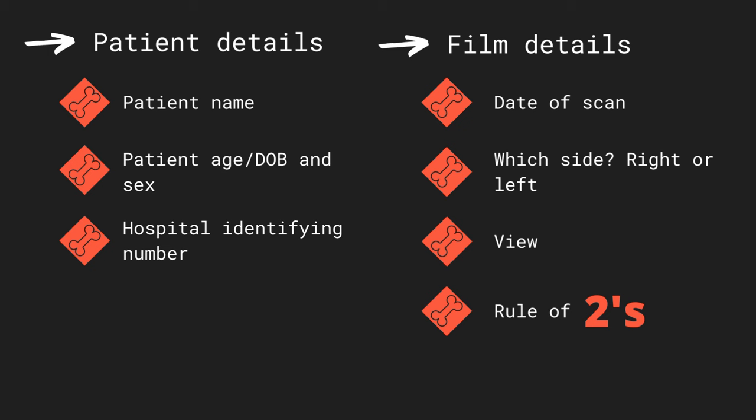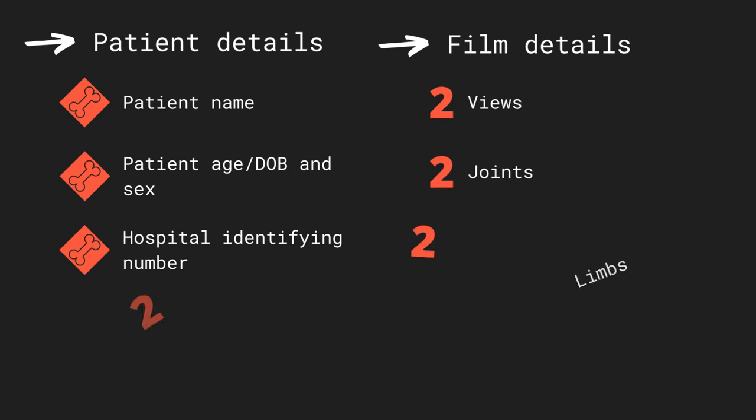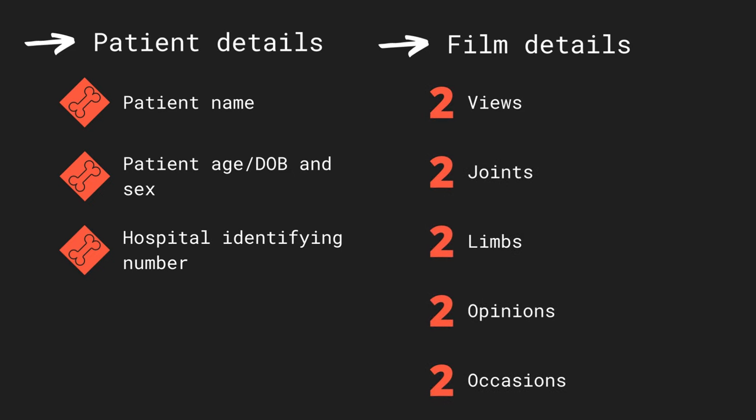A useful memory aid at this stage is the rule of twos. The rule of twos dictates five criteria which should be fulfilled to adequately assess an affected site. It calls for two views of the area, usually AP and lateral, and for two joints to be visible in the resulting film — that is, the joint above and below the potential fracture site. Additionally, this principle states that best practice calls for x-ray of both limbs for comparison, which is particularly important in children where growth plates may be affected. Previously taken x-rays of the affected area should also be considered for comparison from baseline. It is often useful to get two opinions on the same radiological film to confirm the validity of the assessment.